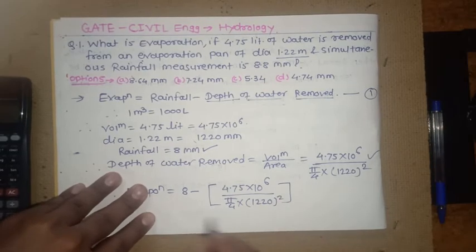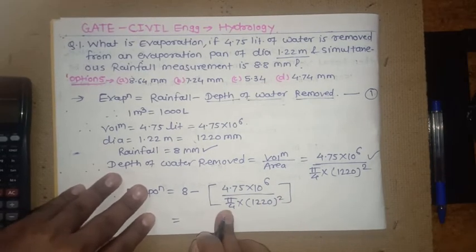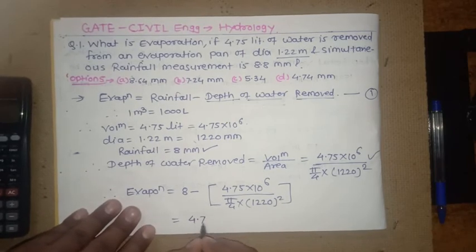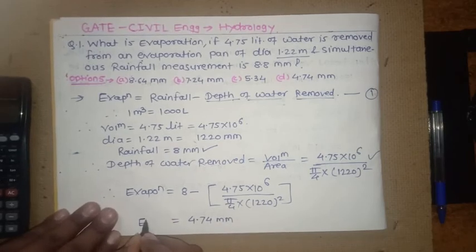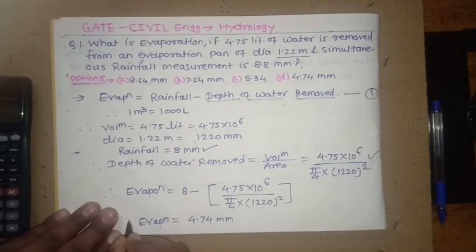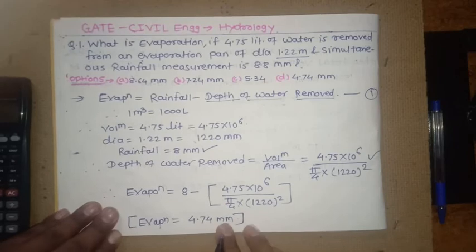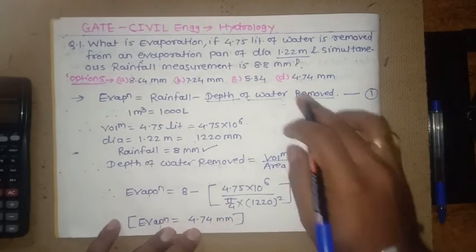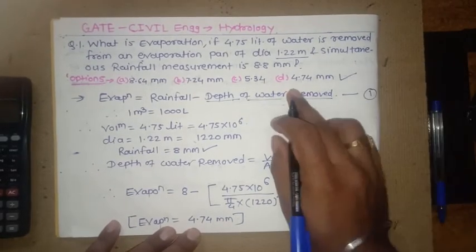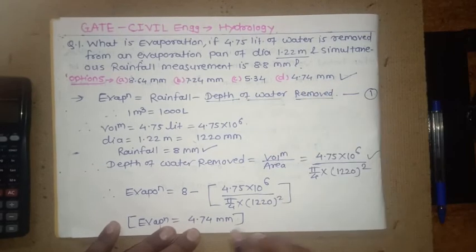After solving this we have answer 4.74 mm. So this is your evaporation. This is nothing but our option number D, 4.74 mm, and this is the answer.